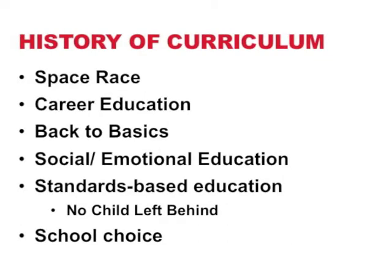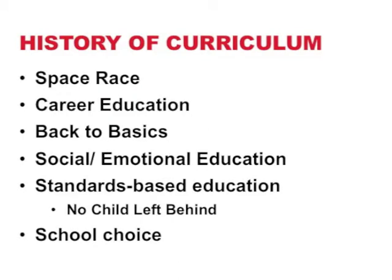We won the space race, but there was a backlash to all that emphasis on math and science. We had a ton of people being trained as mathematicians and scientists, but what about other fields? So in the 70s, career education came in — the idea of preparing students to have careers when they got out of school, picking different tracks, choosing whether to focus on math or English, mostly at the secondary level.